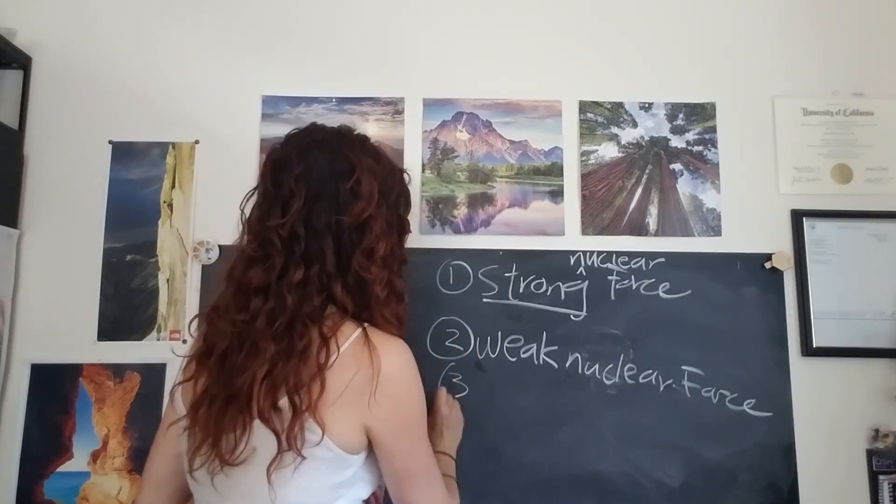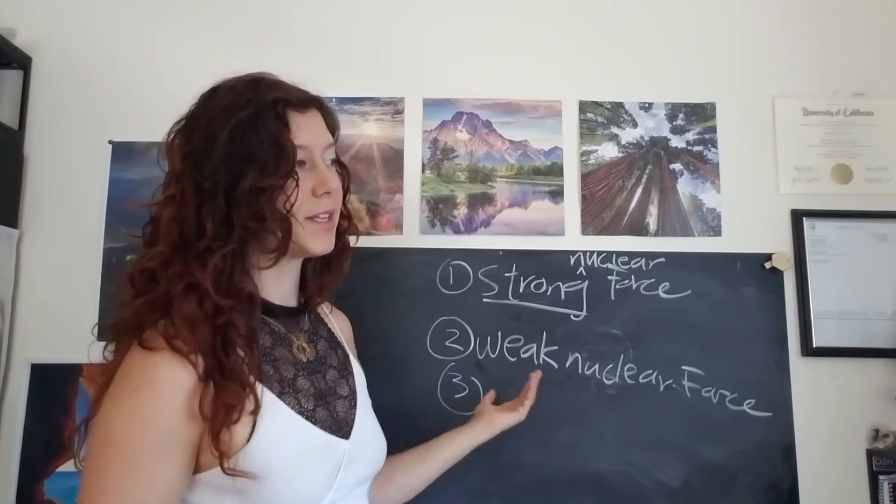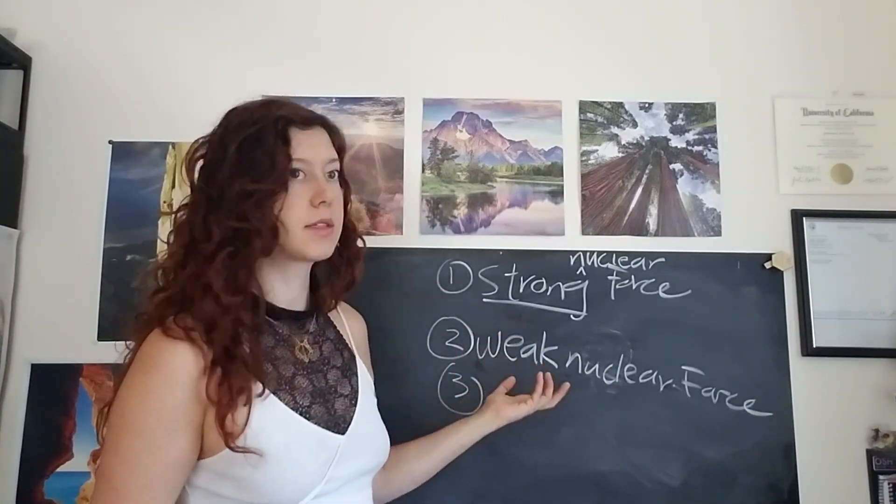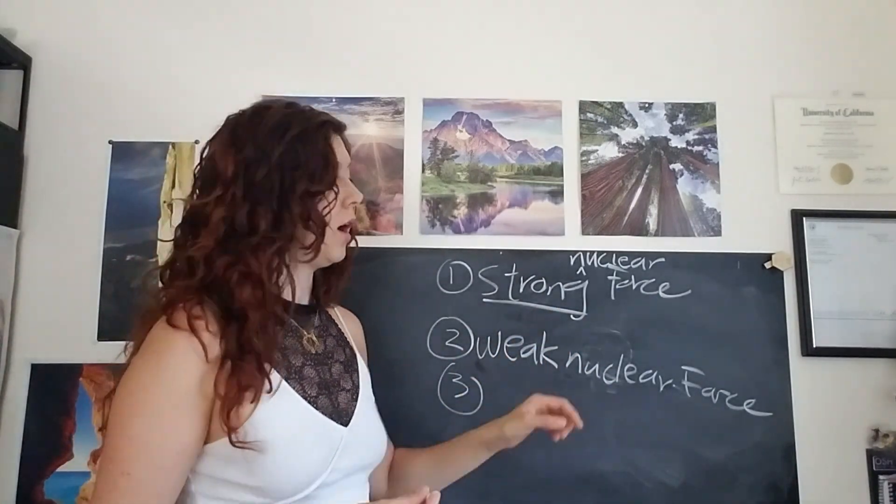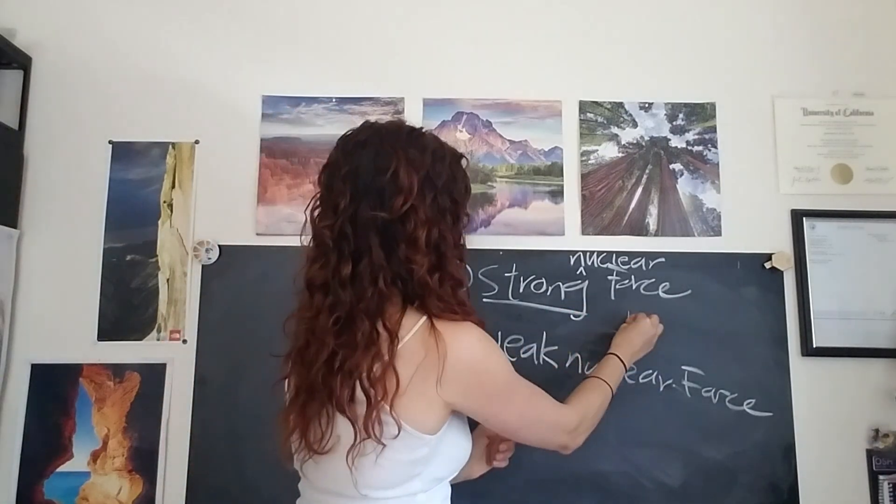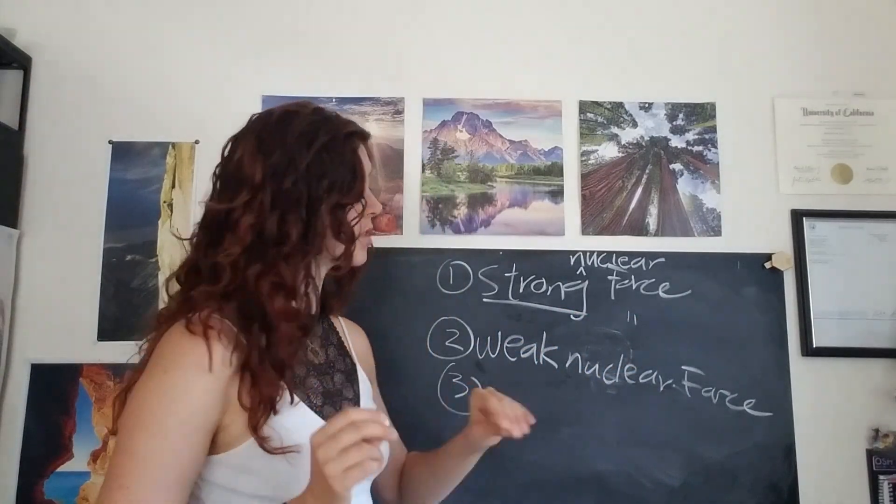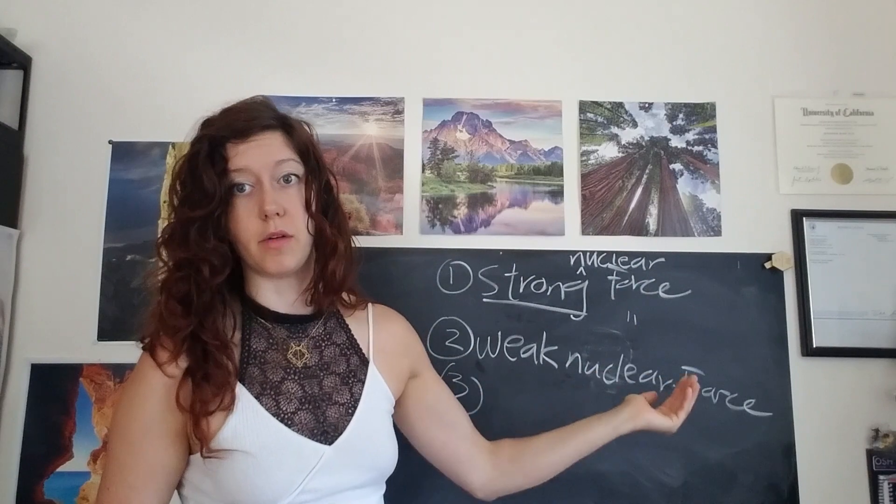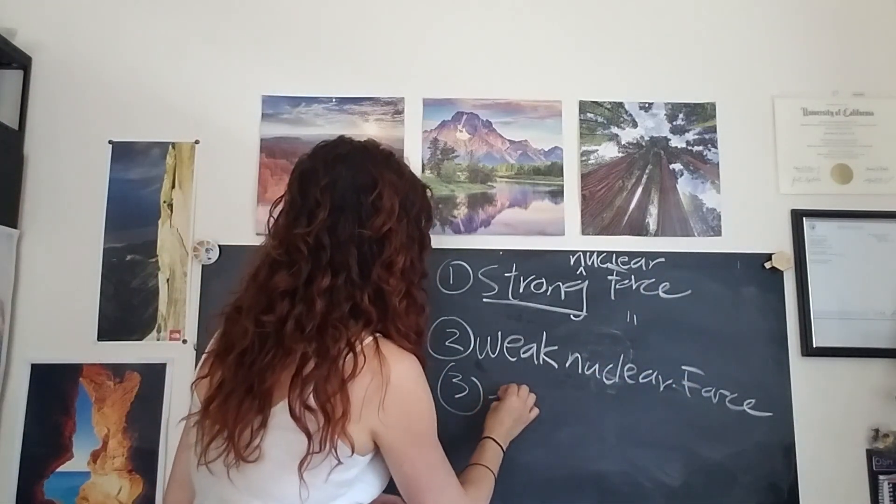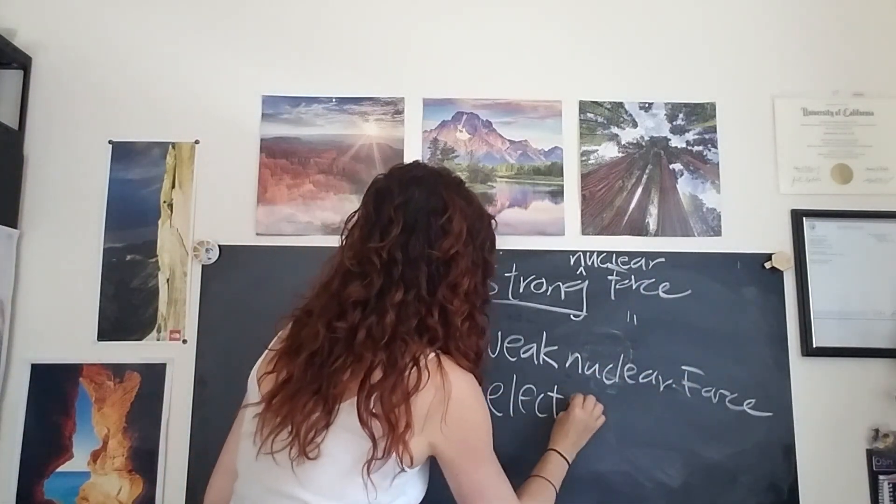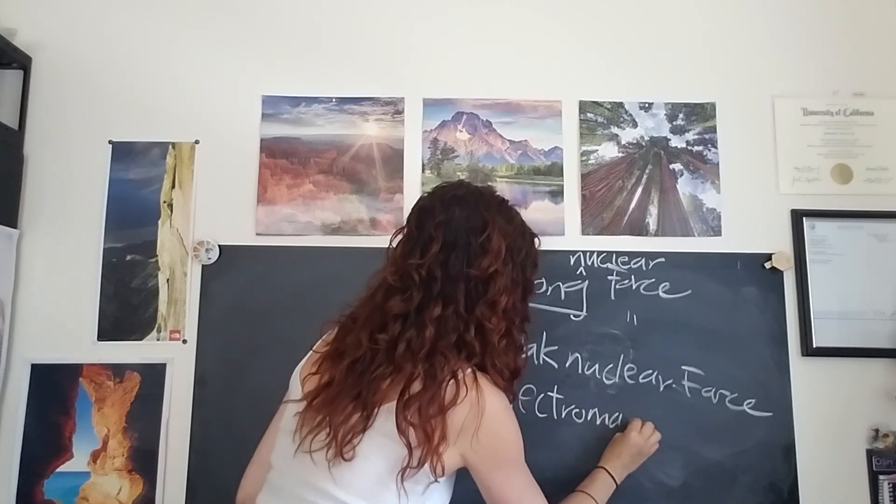And then after that, oh, and I should say, you probably figured this out, but it's called the weak force because it's weaker than the strong force. So the strong force happens on the teeniest of tiny scales, the weak force is slightly above that. And then you have the electromagnetic force.